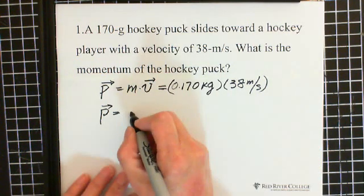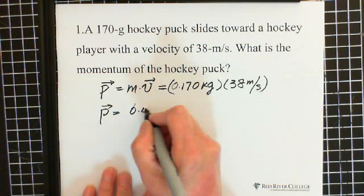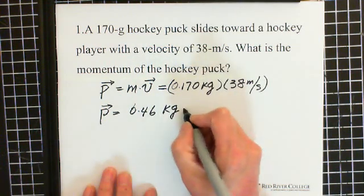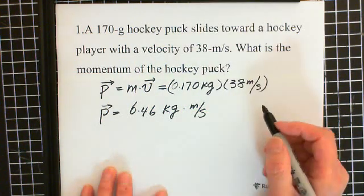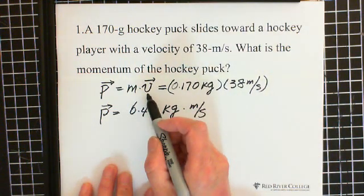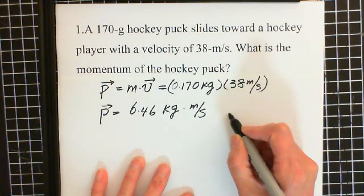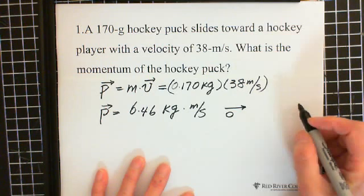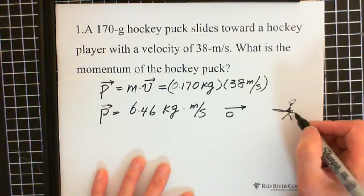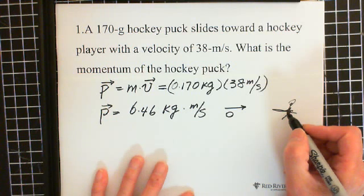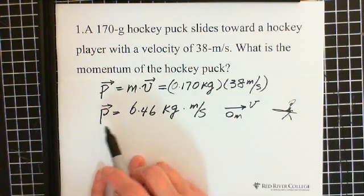The velocity is 38 meters per second. So p equals 0.170 kilograms multiplied by 38, which gives 6.46 kilogram meters per second. The direction of momentum is the same direction as the velocity — towards the hockey player.